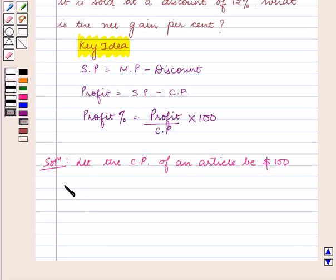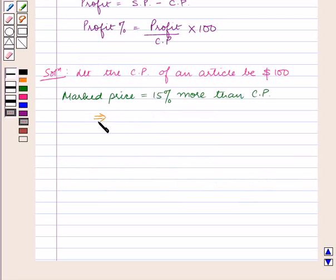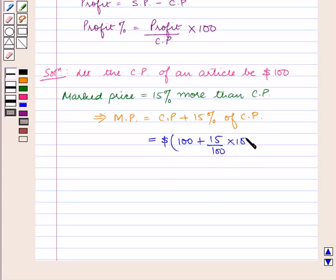We are given that mark price is equal to 15% more than the cost price. This implies mark price is equal to cost price plus 15% of cost price. That is equal to 100 plus 15 upon 100 into 100, which is equal to 100 plus 15 dollars. That is equal to $115.